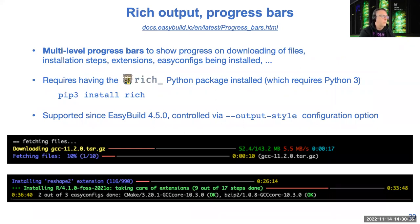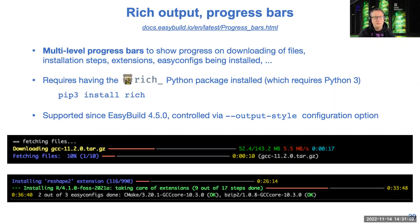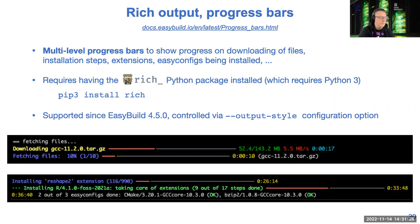Perhaps the most recent big feature worth mentioning is the richer output EasyBuild can give you by leveraging the `rich` Python package. It's not a required dependency, but if installed, EasyBuild uses it to provide colorful output and progress bars when downloading files or running installations. When installing extensions — potentially over 1,000 for a recent R EasyConfig — it shows how many are done, how many remain, and how much time has been spent. I strongly recommend installing the `rich` Python package with the same Python version as EasyBuild; it will be enabled automatically.